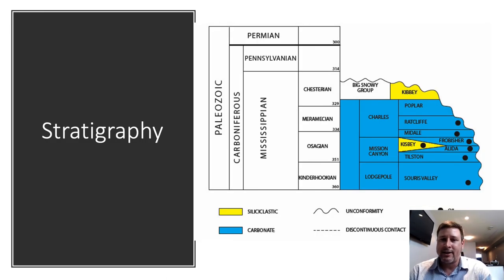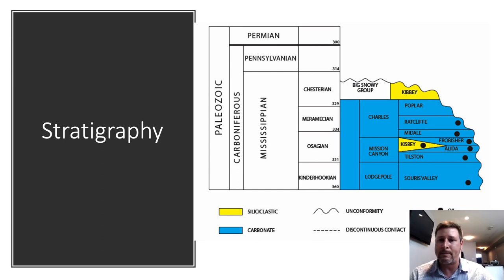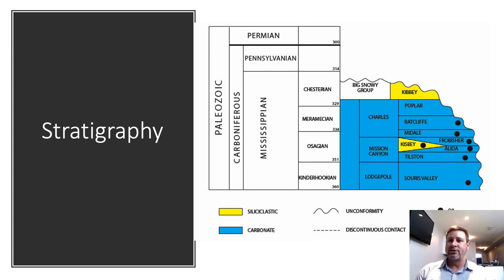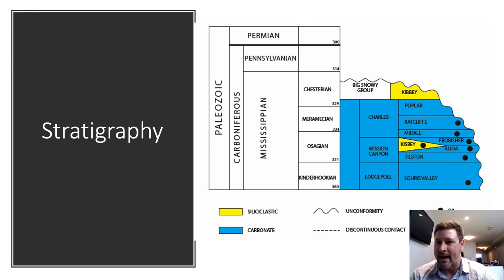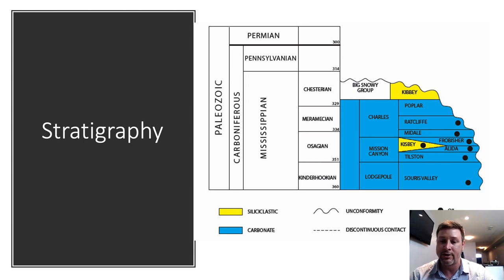Looking at the stratigraphy from the Ministry of Energy and Resources — this is essentially how it stacks up. I would preferably remove the KISB because I don't think it's a time equivalent between the Elida and the Frobisher. Of course there is a time equivalent and it's probably an erosive surface. Is there sand sometimes between those two units? Absolutely. But that doesn't mean there's a KISB sand — I have yet to see evidence of a widespread sand across the entire basin. It's simply not there.